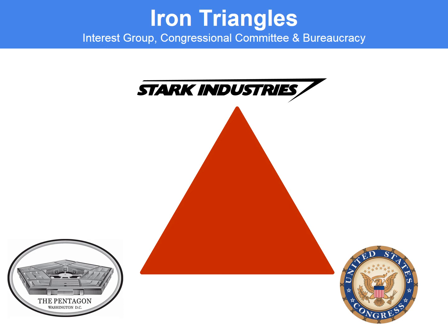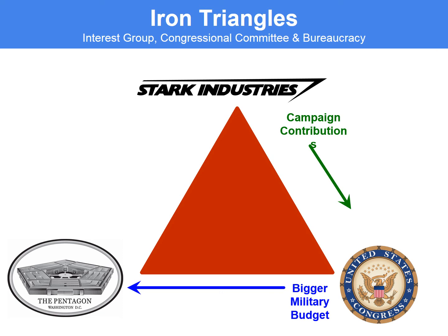You can see Stark Industries here as our corporation, the Pentagon as part of our bureaucracy, and then a U.S. congressional committee member. How this works is: Stark Industries gives campaign contributions to a U.S. senator or representative, who then gives money at the request of Stark Industries to a bigger military budget. Now that the Pentagon has a bigger military budget, they sign their weapons contract to Stark Industries, which costs a lot of money.